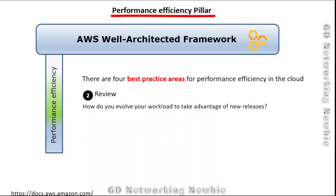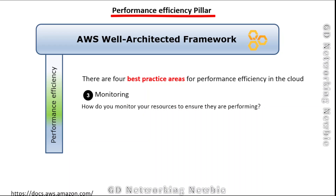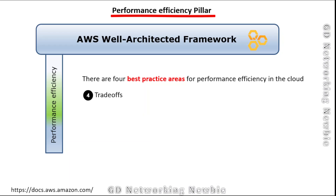The second best practice area is review: how do you evolve your workload to take advantage of new releases? We should keep updating and taking advantage of new releases. Third is monitoring: how do you monitor your resources to ensure they are performing? And fourth is trade-off: how do you use trade-offs to improve performance? Based on monitoring results, we may need to make trade-off decisions.